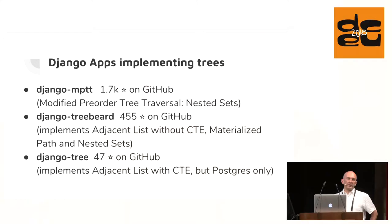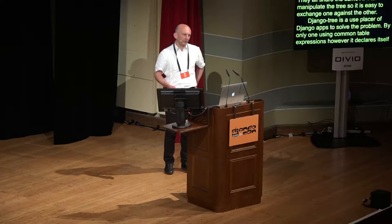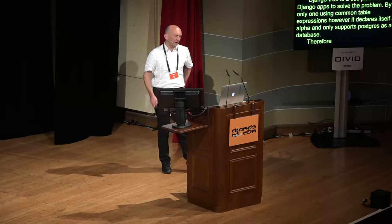Let's compare three libraries which are available to solve the tree problem. Django MPTT is the most well-known library. It implements the nested sets tree pattern but identifies itself as modified pre-order tree traversal. Therefore MPTT. Django Treebeard implements the first three SQL patterns I have shown: the adjacent lists without common table expressions, materialized paths, and nested sets. They all share the same API to manipulate the tree so it's easy to exchange one against the other. And Django Tree is the newest player of Django apps to solve this problem. It's, by the way, the only one using common table expressions. However, it declares itself as alpha and only supports Postgres as a database. Therefore if your app shall be unopinionated to any databases, that's not an option for you.